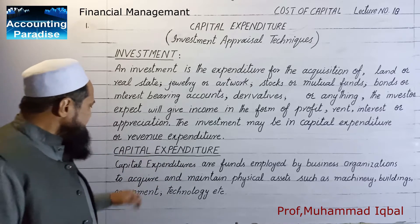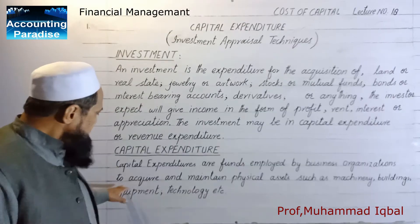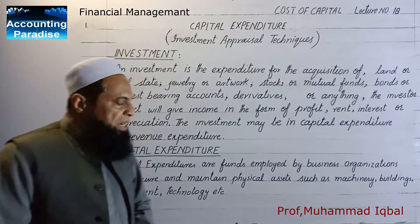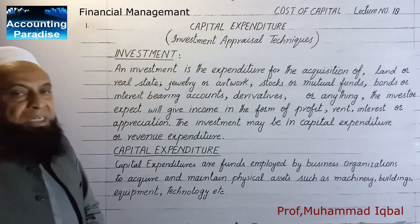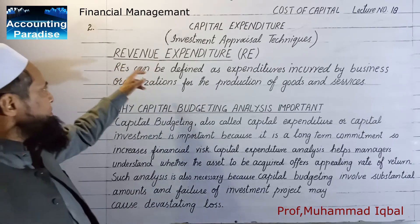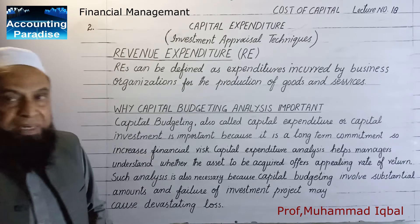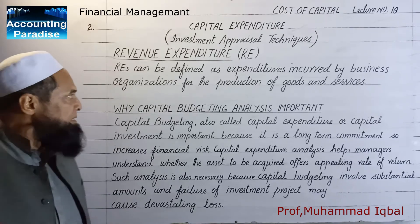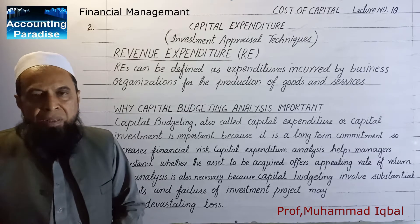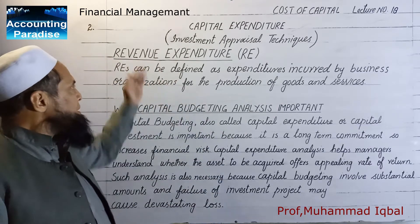The investment may be in capital expenditure or revenue expenditure. Capital expenditures are funds employed by the business organization to acquire and maintain physical assets such as machinery, buildings, equipment, technology, etc. Revenue expenditures can be defined as expenditures incurred by the business organizations for the production of goods and services.